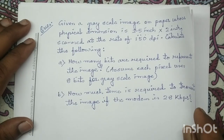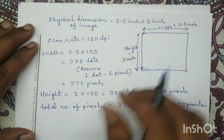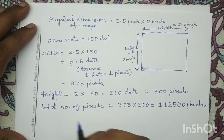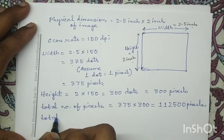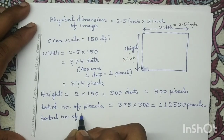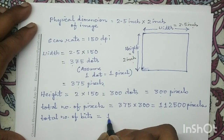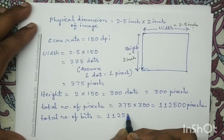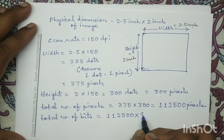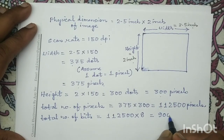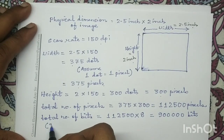In this question, each pixel uses 8 bits for representation. We have a total of 112,500 pixels and each pixel uses 8 bits. So the total number of bits, which is the size of this digital input image, is 112,500 multiplied by 8, which equals 900,000 bits. This is the total image size in terms of bits.